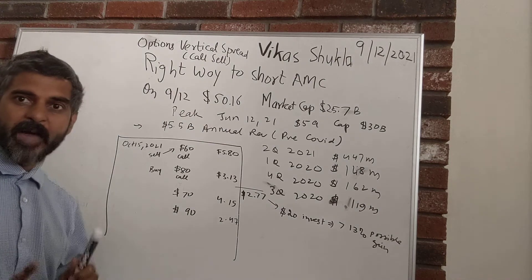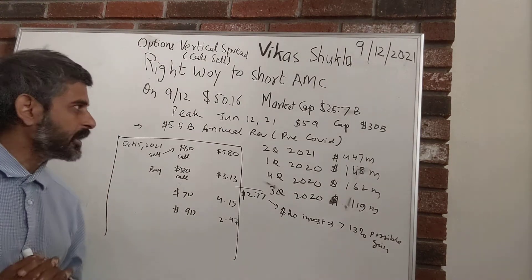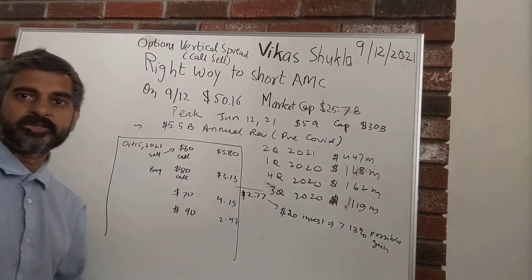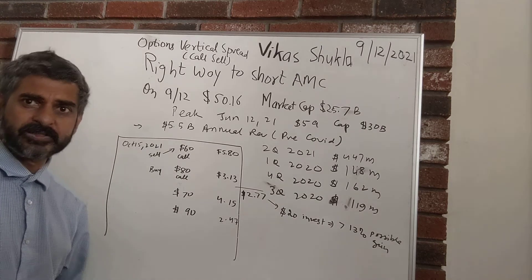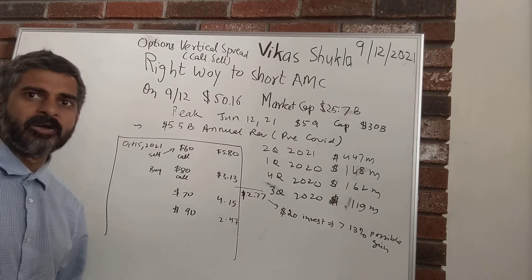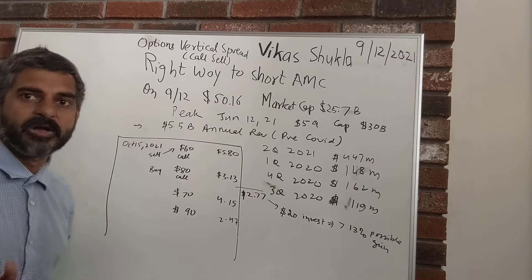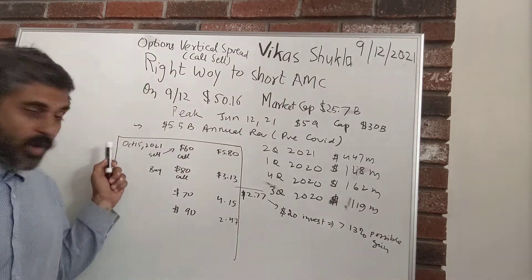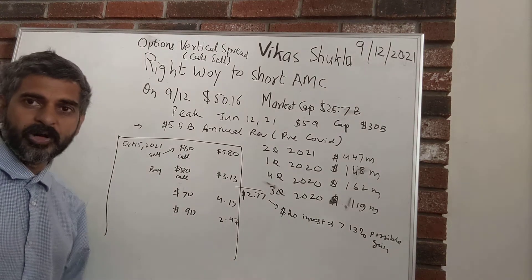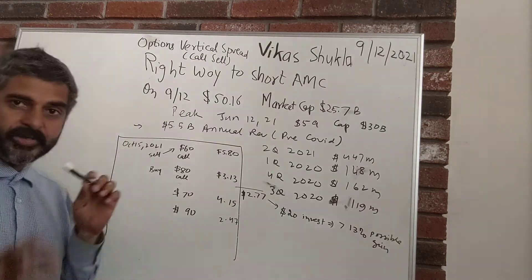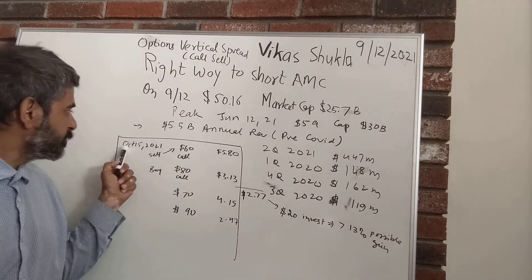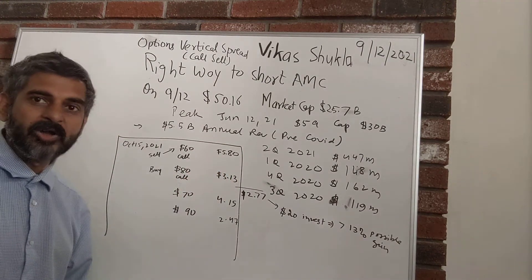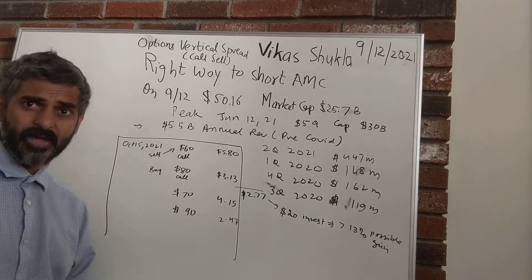In options trading, I want to derive the conclusion that it's very hard for this stock to get beyond $60. That's my thinking — I could be wrong, but I'm going to take a stand that it's very nearly impossible for this stock to go beyond $60. So I go to the options tab in my brokerage account or Yahoo Finance, look at the October 15, 2021 $60 call, and find that the price of that option is $5.80.